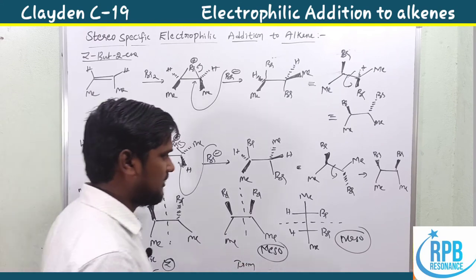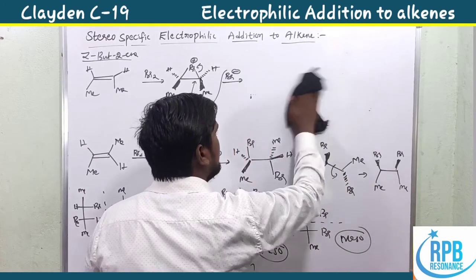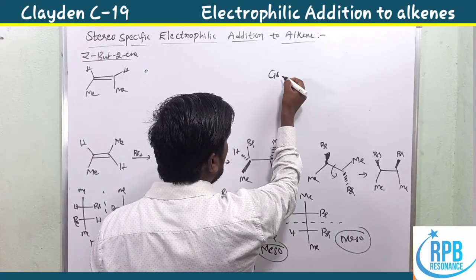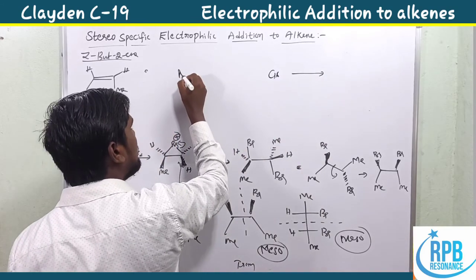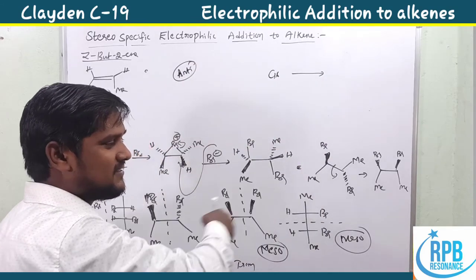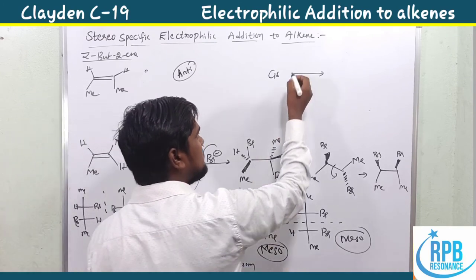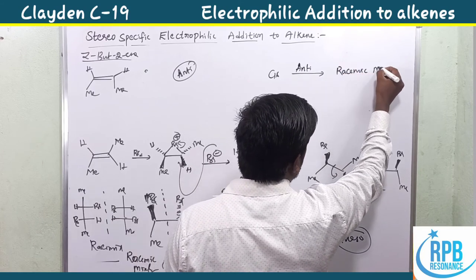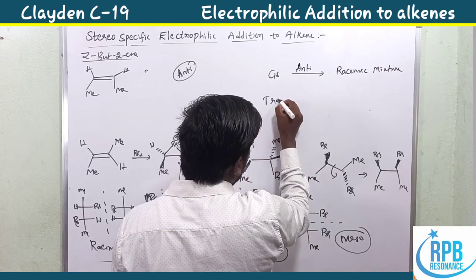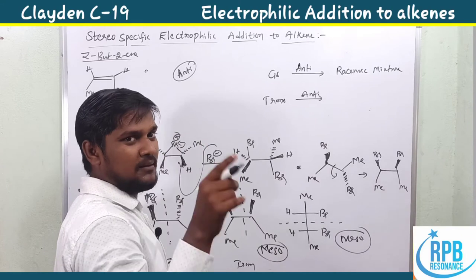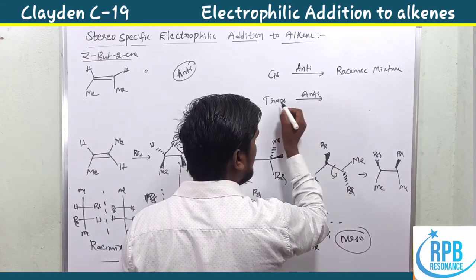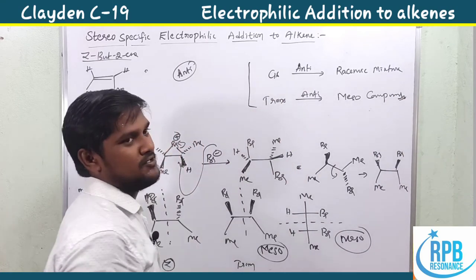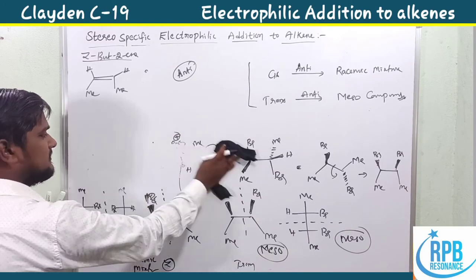The final overall conclusion: when the compound is cis and the reagent is bromine (anti-addition), we get a racemic mixture. For the trans compound with the same anti-addition using bromine as the electrophile, we get meso compounds. This is the overall stereospecificity of bromination.